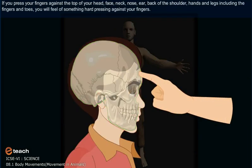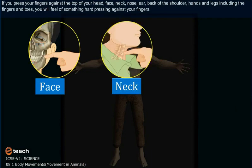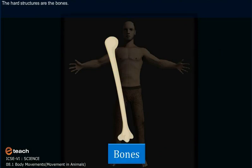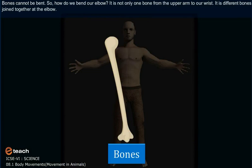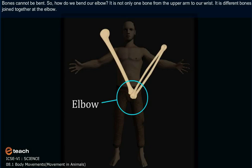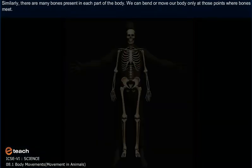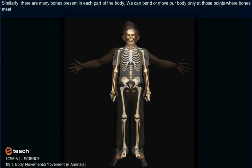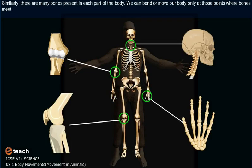If you press your fingers against the top of your head, face, neck, nose, ear, back of the shoulder, hands, and legs including the fingers and toes, you will feel something hard pressing against your fingers. These hard structures are the bones. Bones cannot be bent. So how do we bend our elbow? It is not only one bone from the upper arm to our wrist — it is different bones joined together at the elbow. Similarly, there are many bones present in each part of the body. We can bend or move our body only at those points where bones meet.